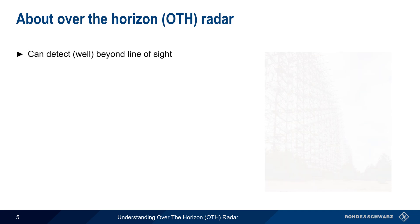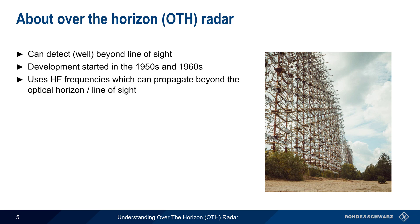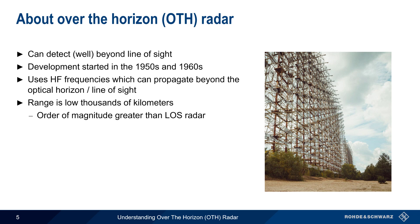Radars which can see beyond the optical line-of-sight are called over-the-horizon or OTH radars. You may also sometimes hear these referred to as backscatter radars. OTH radar development began in the 1950s and 1960s, and they are still being operated and developed today. The ability of OTH radars to see beyond the optical horizon comes from their use of HF frequencies, that is frequencies in the range of about 3 to 30 megahertz. A typical OTH radar has a range of low thousands of kilometers, which is an order of magnitude greater than most line-of-sight radars, increasing the coverage area by roughly two orders of magnitude.